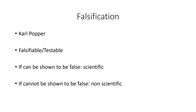Falsificationism is a view of science put forward by Karl Popper. Sometimes you'll hear scientists or philosophers use the word 'testable' instead of 'falsifiable,' or 'testability' instead of 'falsificationism,' but they can be used interchangeably. The falsifiable or falsificationist view of science is that if a hypothesis or idea can be shown to be false, then it's scientific.